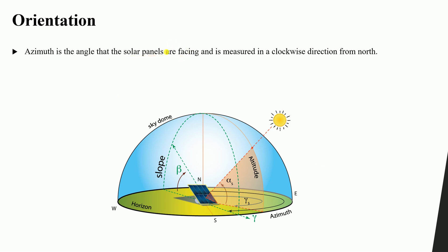The azimuth is the angle that the solar panels are facing, and it is measured in a clockwise direction from the north. If we draw the line of the north, the angle from that north line to the direction the panels are facing is called the azimuth angle. This angle represents the orientation of the solar panel, and it is different from the tilt angle.